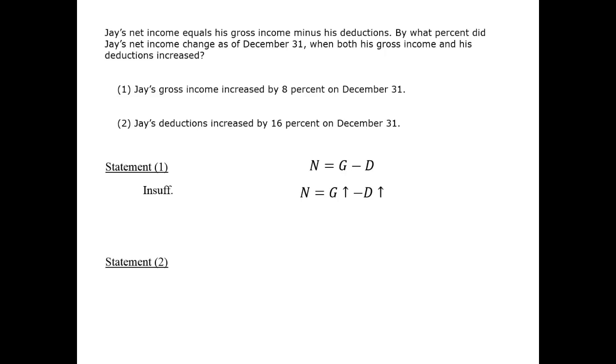Statement two is insufficient by comparable logic. In this case, we don't know anything about the gross income, and it could swing wildly in its change. Therefore, it's insufficient.